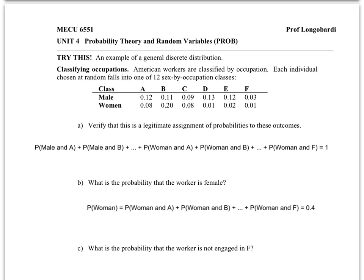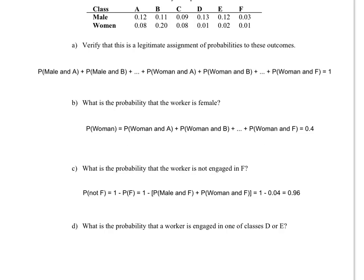Next problem: what is the probability that the worker is not engaged in occupation F? The probability of being in F is found by adding the two probabilities in that column, which is 4%. So the probability of not being in F is 1 minus the probability of F — that's 1 minus 4% — which equals 96%.